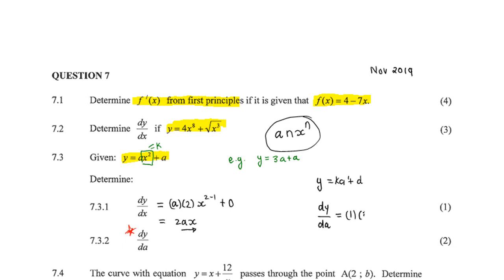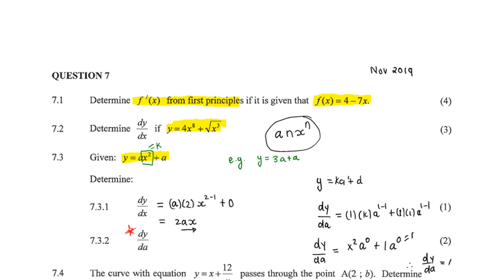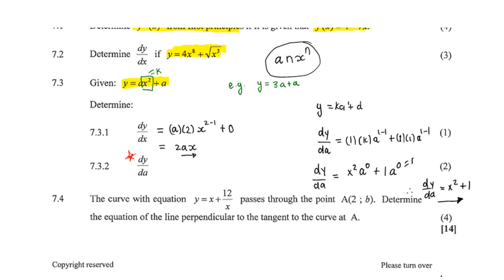Now concentrate on the variable a. The exponent on a in both terms is 1, so apply the power rule: dy/da equals 1 times k times a^(1-1) plus 1 times 1 times a^(1-1). Reversing the substitution k equals x squared, that gives x squared times a^0 plus 1 times a^0. Since anything to the exponent 0 is 1, dy/da equals x squared plus 1.